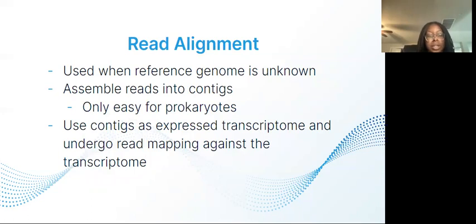More about read alignment. Scientists use read alignment when the reference genome is unknown. During this process, reads are assembled into contiguous sequences. Prokaryotes are easily able to undergo this process because they do not undergo RNA processing. These contiguous sequences formed during read alignment are expressed as transcriptomes and undergo read mapping against transcriptome.